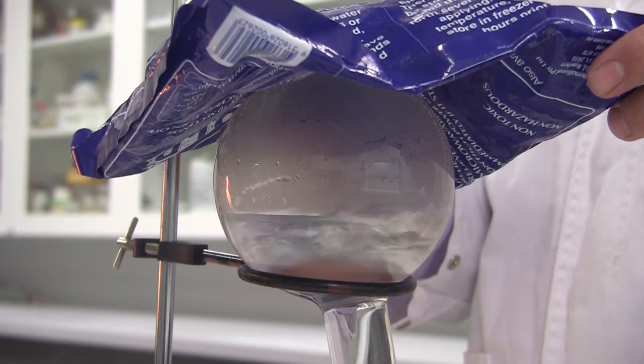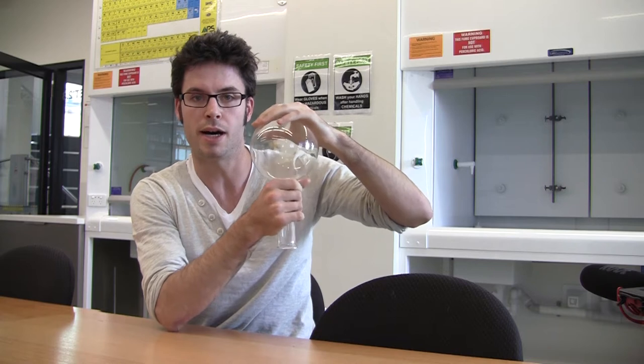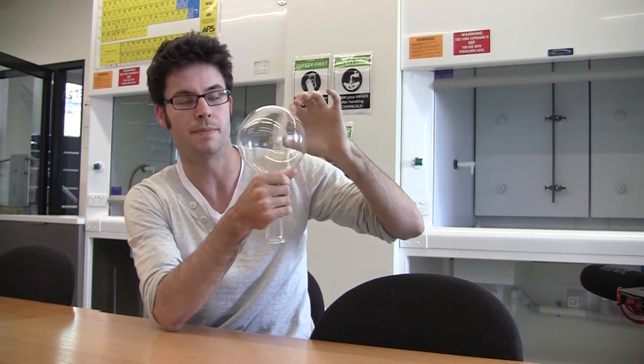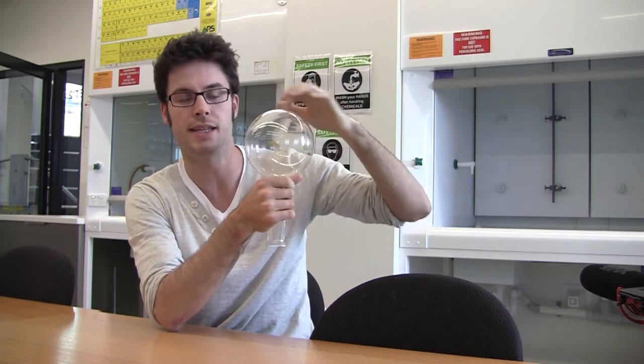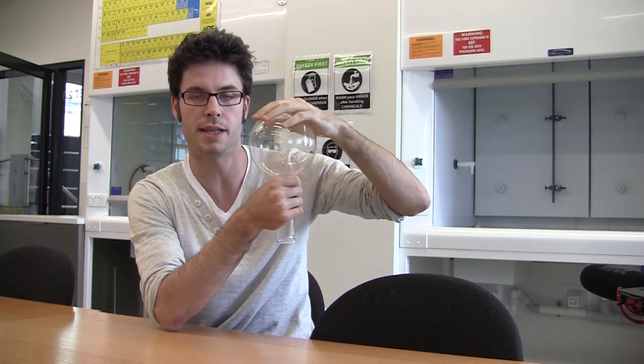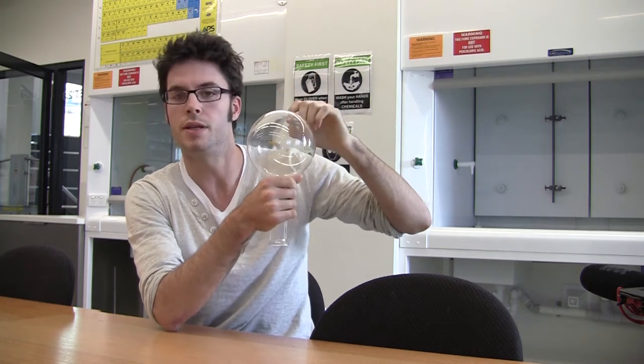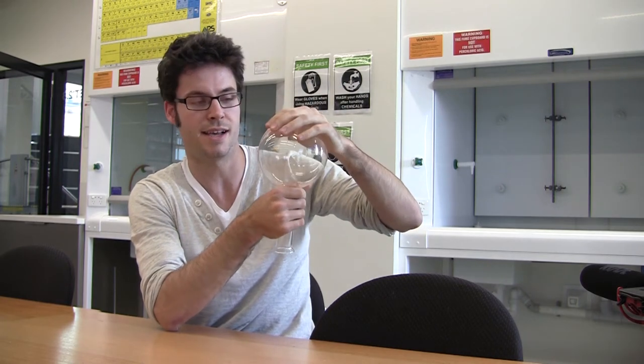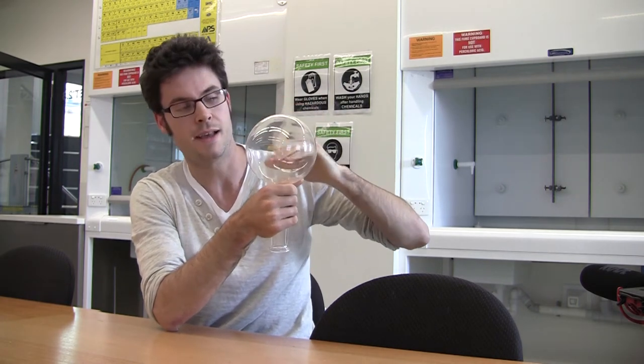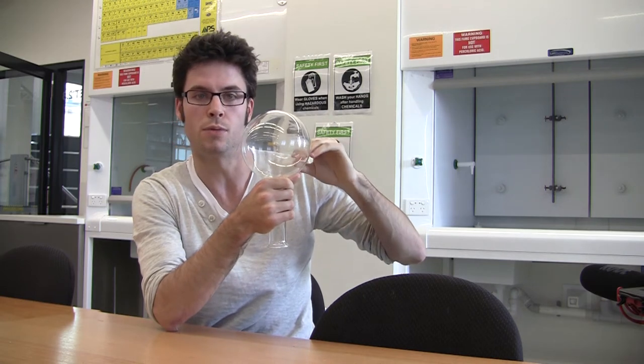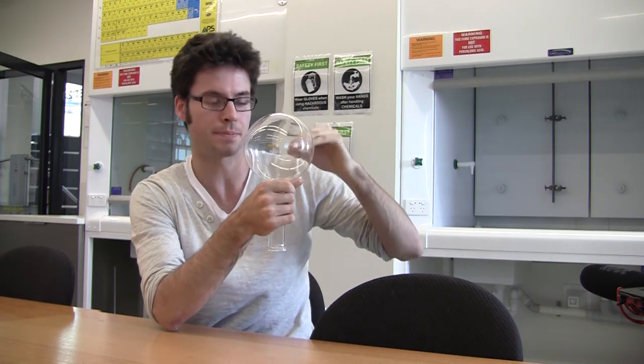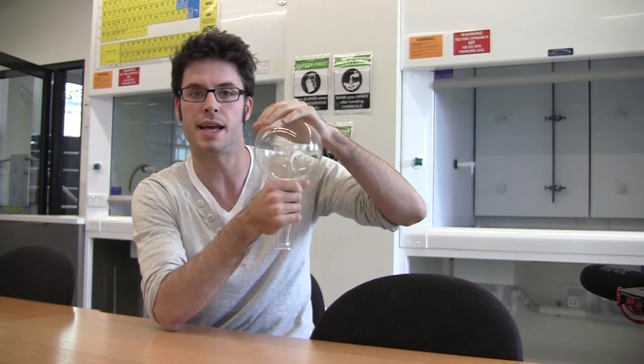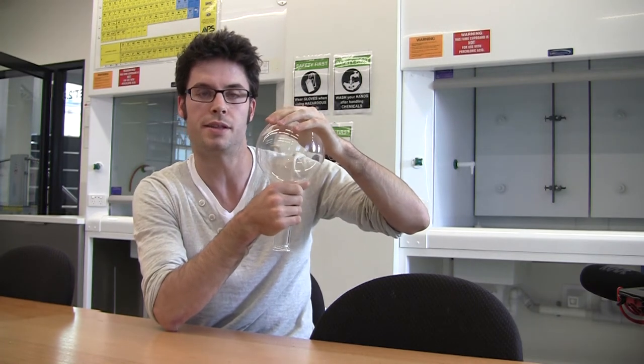Now what's happened is we've reduced the temperature in the top half of the flask, so the water is going to start condensing around the top of the glassware there. And as it's doing that, the pressure in the top half of the flask is going to be reduced and it's going to make it easier for water molecules in the liquid basically to enter the gaseous phase and to move out of the liquid there.